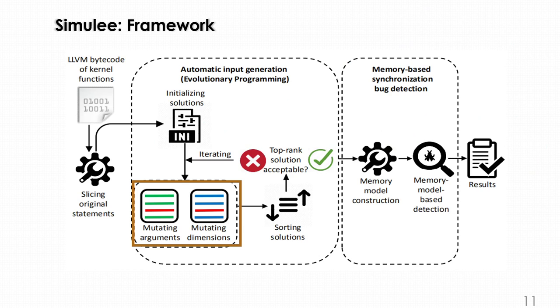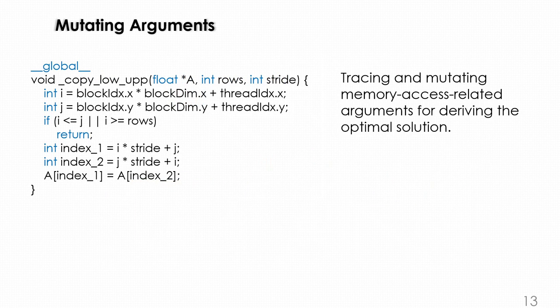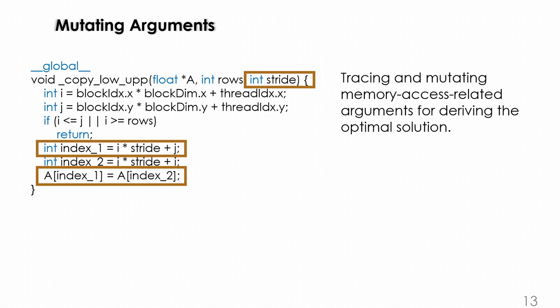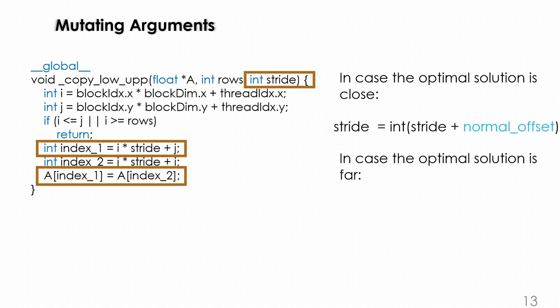Here is our mutation part. First we mutate an argument. We're tracing and mutating memory accessibility arguments for deriving the optimal solution. We can see the slider can actually affect the memory address, so we choose slider to mutate. In case the optimal solution is close, we use the normal distribution to let the slider increase a little bit. In case the optimal solution is far, we generate offset by Cauchy distribution to make the slider bigger.